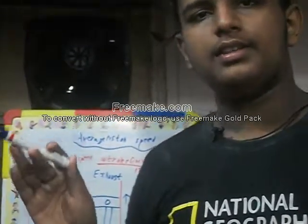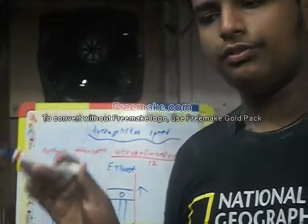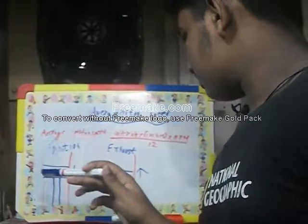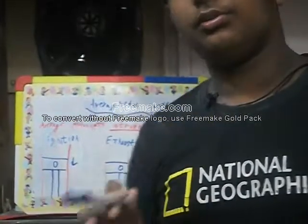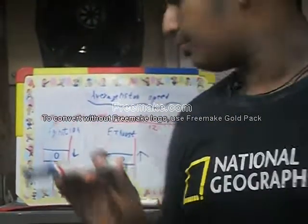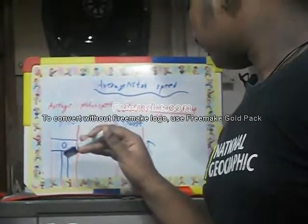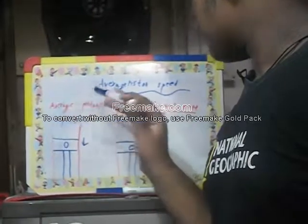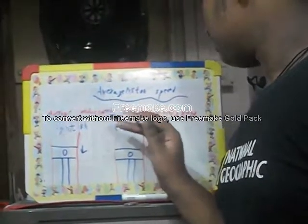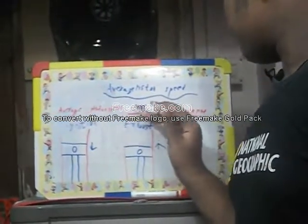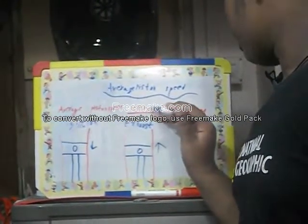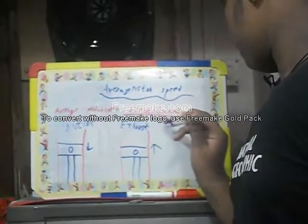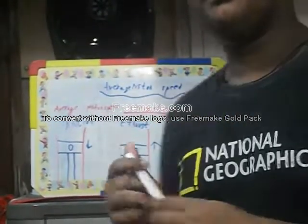The mixture of air and fuel combusts and produces a tremendous amount of energy which pushes the piston down. So the average piston speed equals 2 times stroke in inches, multiplied by RPM, divided by 12.